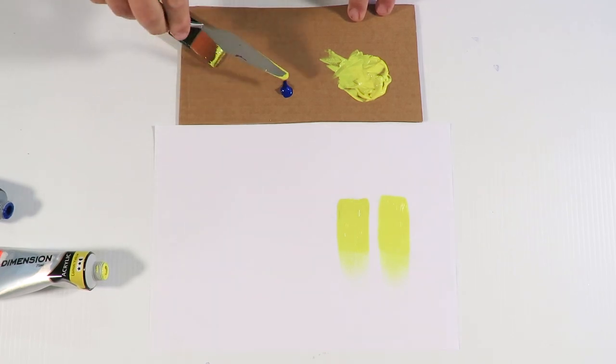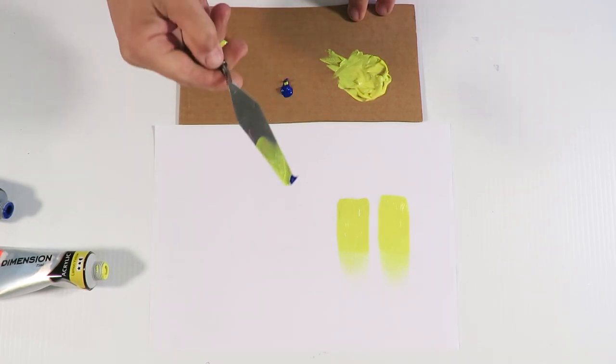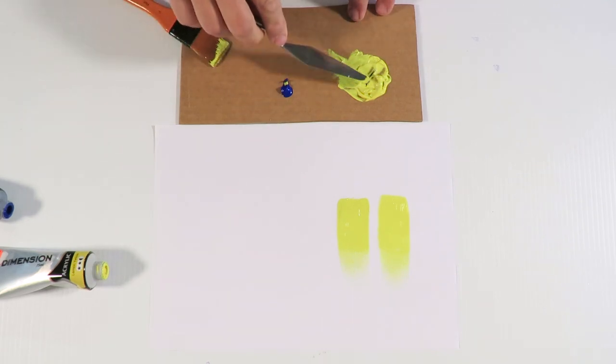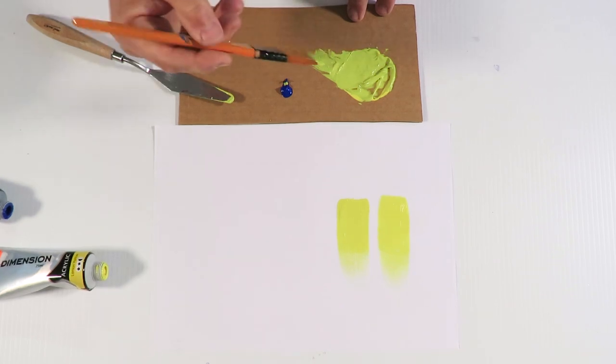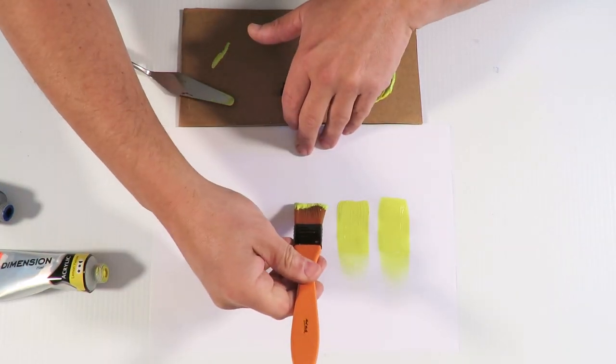Right now we just keep going. Add a little bit more blue to the yellow. And paint this on the paper for you so you can see what it looks like.